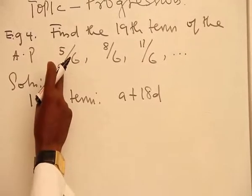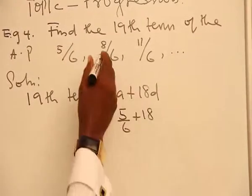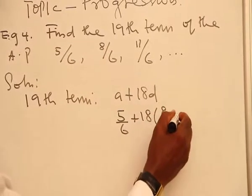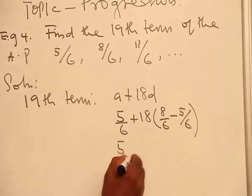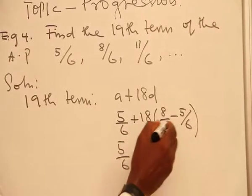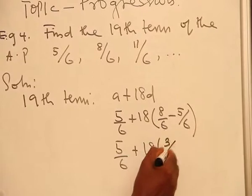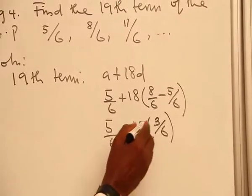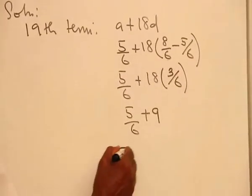And from the AP given to us, our A is 5 all over 6. And our D is the common difference, which is 8 over 6 minus 5 over 6. This will give you 5 over 6 plus 18. Since the denominators are equal, you can subtract the numerator, which is 3 all over 6. And that will give you 5 over 6 plus, since we cancel 18 and 3, 3 times 3 is 9.